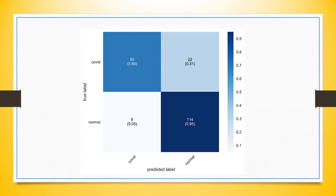After running the logistic regression, to check the accuracy of the model we generate the confusion matrix. Let's take a small example: a person is having COVID or is normal, and we want to detect this with a COVID kit. So a person is having COVID and the kit detected it correctly — 50 such cases. Similarly, a person was normal and the kit detected it correctly — 114 such cases. So 114 plus 50, that is 164 cases, have been correctly classified.